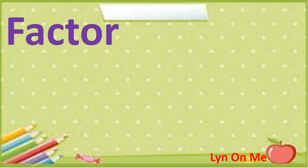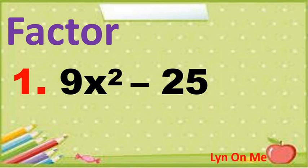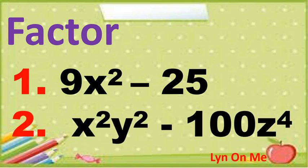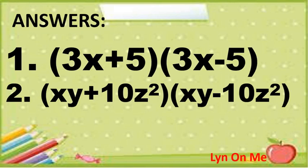Let us perform some exercises. Get the factors of the following binomials. Number 1: 9x squared minus 25. Number 2: x squared y squared minus 100z raised to 4. Here are the answers: number 1 is (3x plus 5)(3x minus 5); number 2 is (xy plus 10z squared)(xy minus 10z squared).